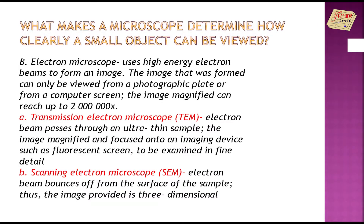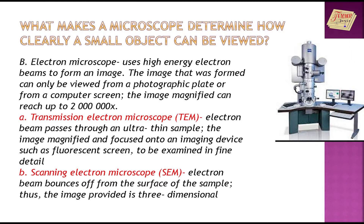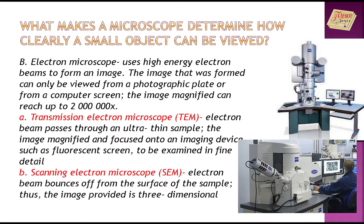Electron microscope uses high-energy electron beams to form an image. The image that was formed can only be viewed from a photographic plate or from a computer screen. The image magnified can reach up to 2 million times. Transmission electron microscope — electron beam passes through an ultra-thin sample; the image is magnified and focused onto an imaging device such as a fluorescent screen. Scanning electron microscope — electron beam bounces off from the surface of the sample, thus the image provided is three-dimensional.